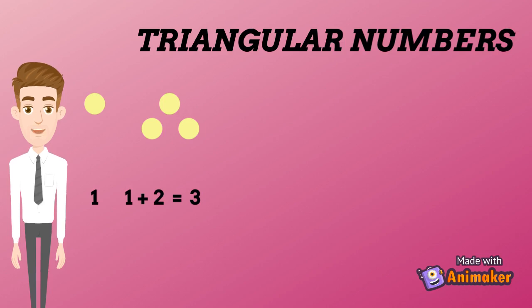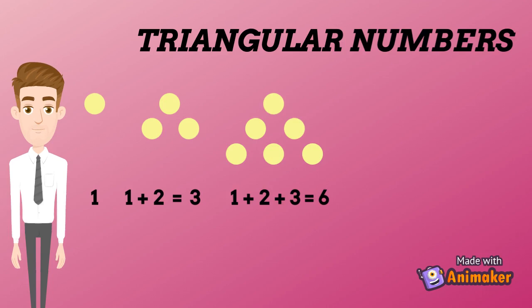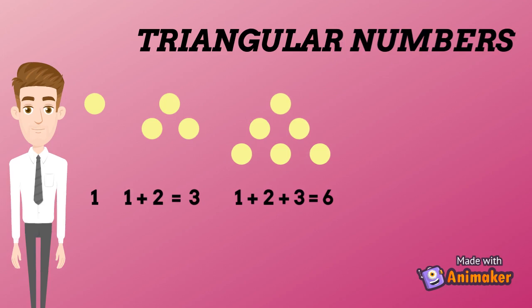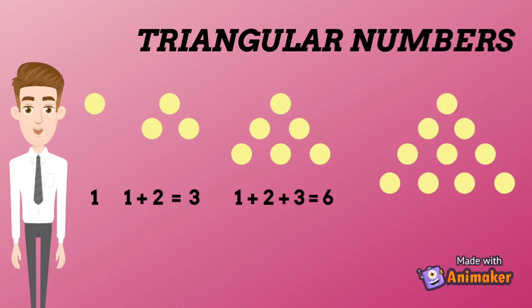Now we will add more dots. The third triangle has another row with three extra dots, making 1 plus 2 plus 3 equals 6. Now we will add a few more dots. The fourth has 1 plus 2 plus 3 plus 4 equals 10.